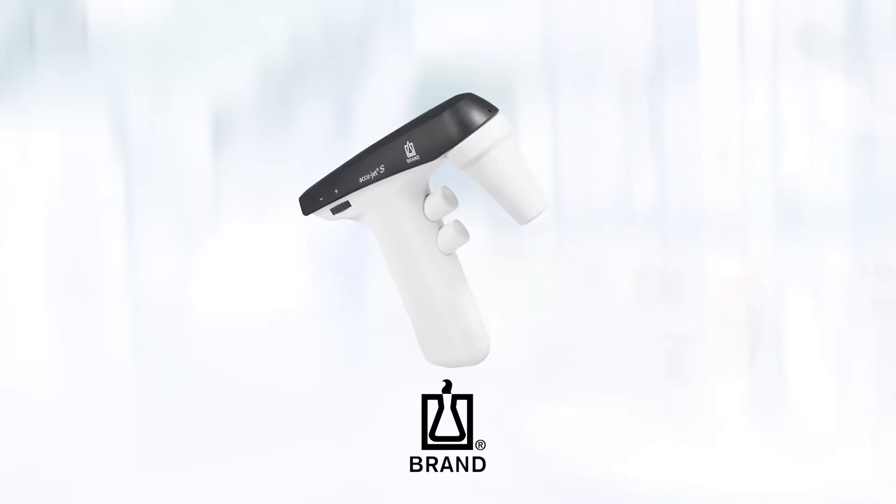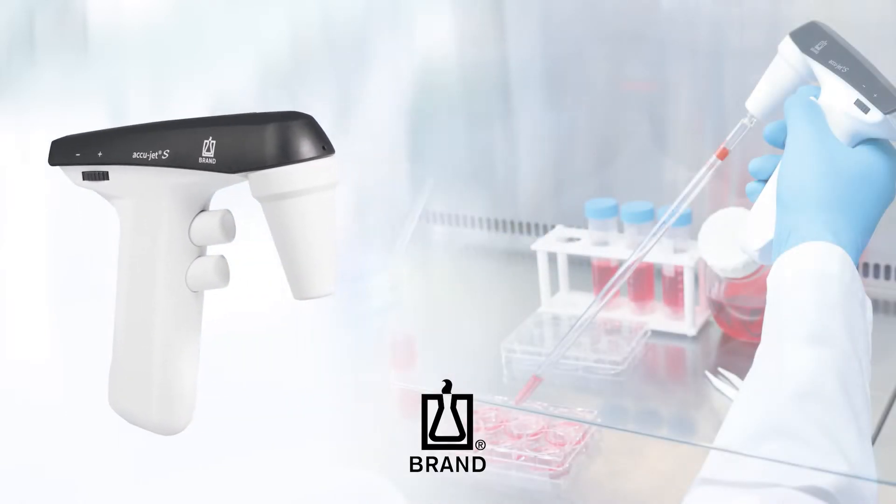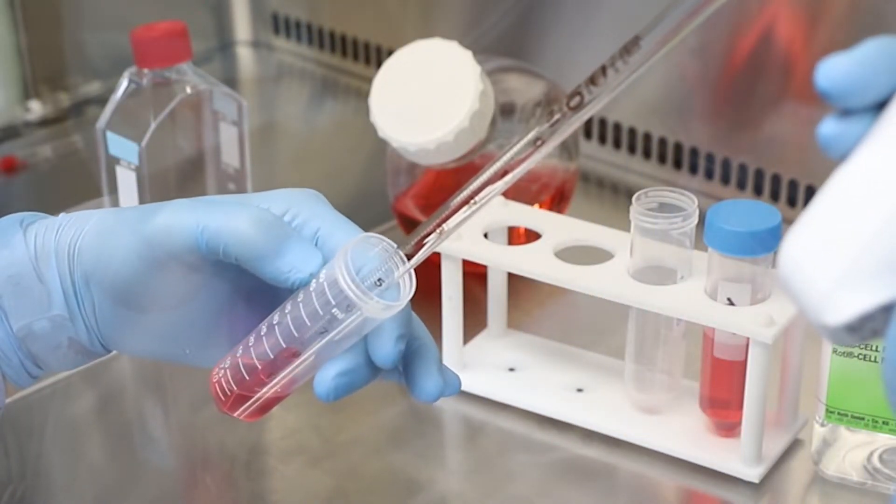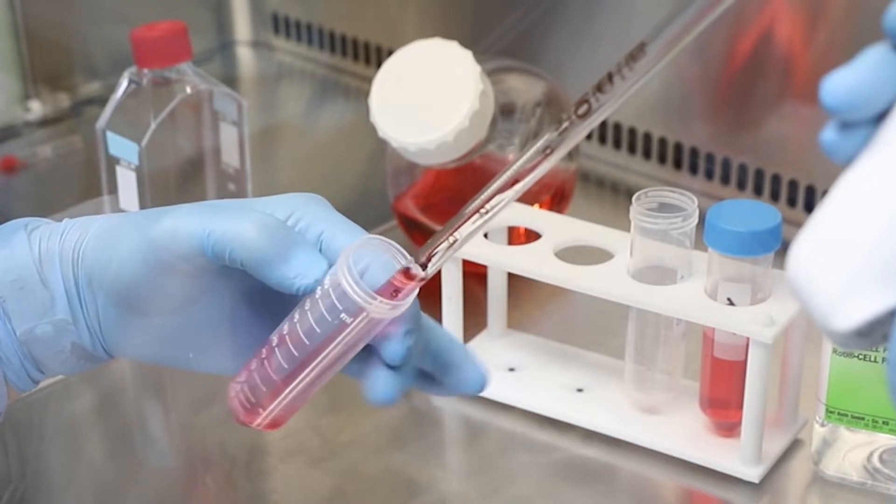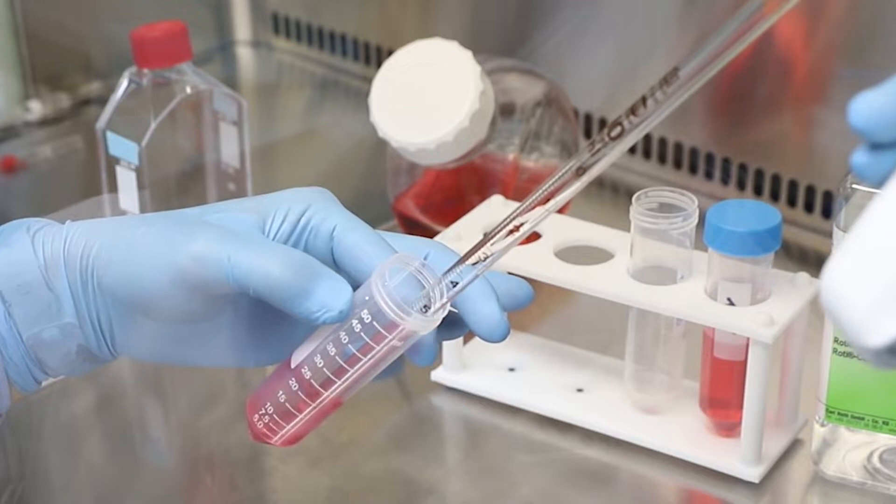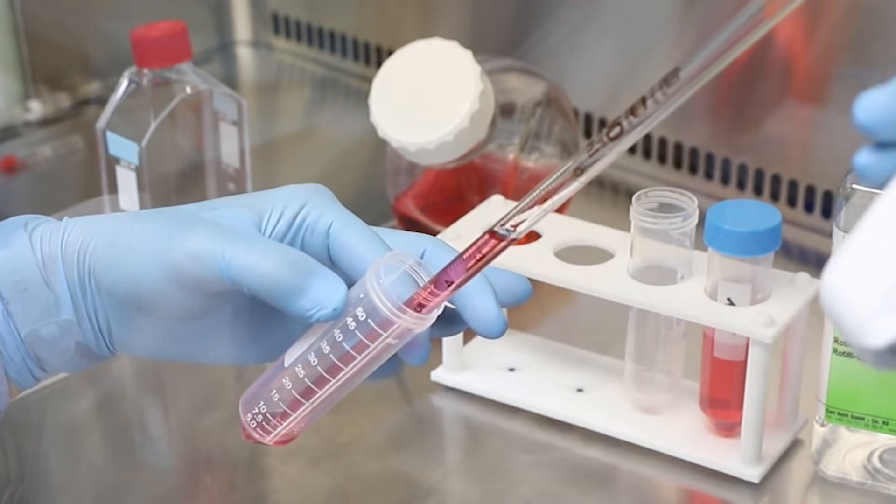The AccuJet S has two dispensing modes: Gravity Delivery and Motor Assist Blowout. Gravity Delivery does not use the motor to dispense liquids. It's often used in analytical lab settings. The Blowout mode uses the motor to dispense liquids rapidly. It's the preferred mode for cell culture work.